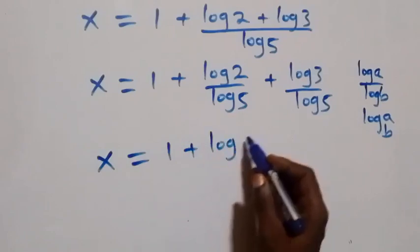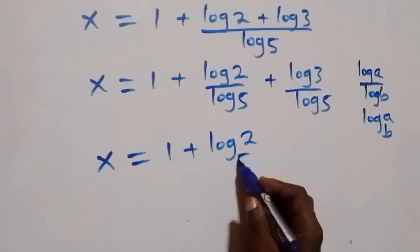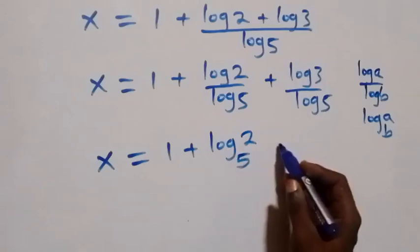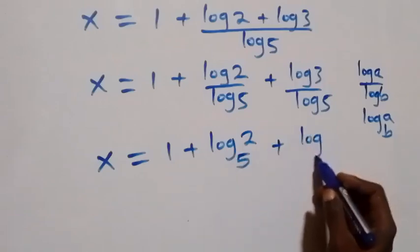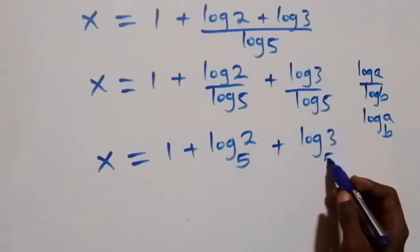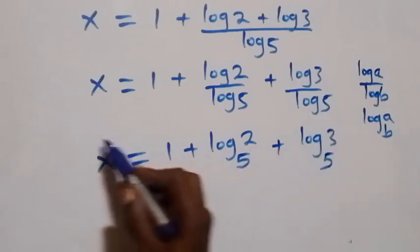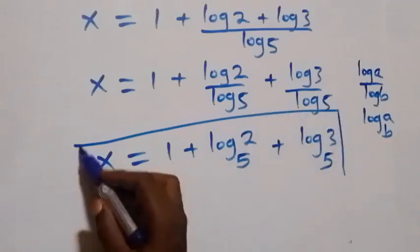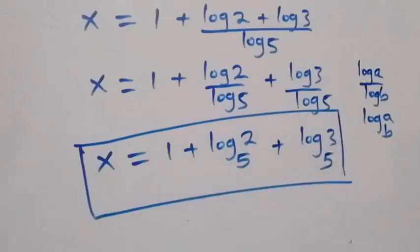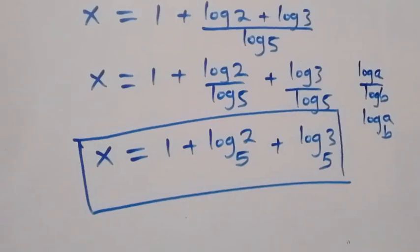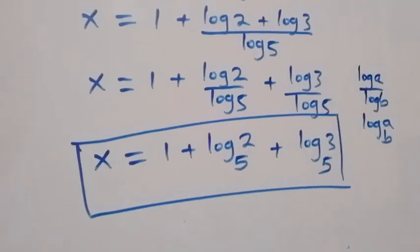This gives log 2 to base 5, then plus log 3 to base 5. So here we have the value of x in this given problem as x equals to 1 plus log₅2 plus log₅3.